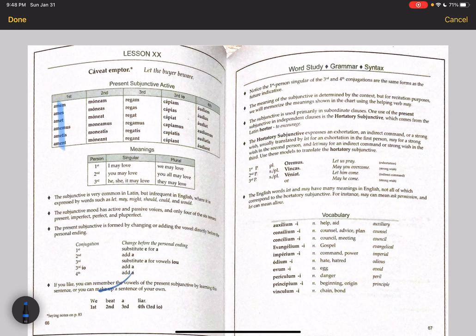In the second conjugation, our normal vowel is e. Here, we have ea instead. The third conjugation is e, or i, and in the subjunctive, it changes to a, and third io. In the fourth, we have ia, where we would normally just have i.